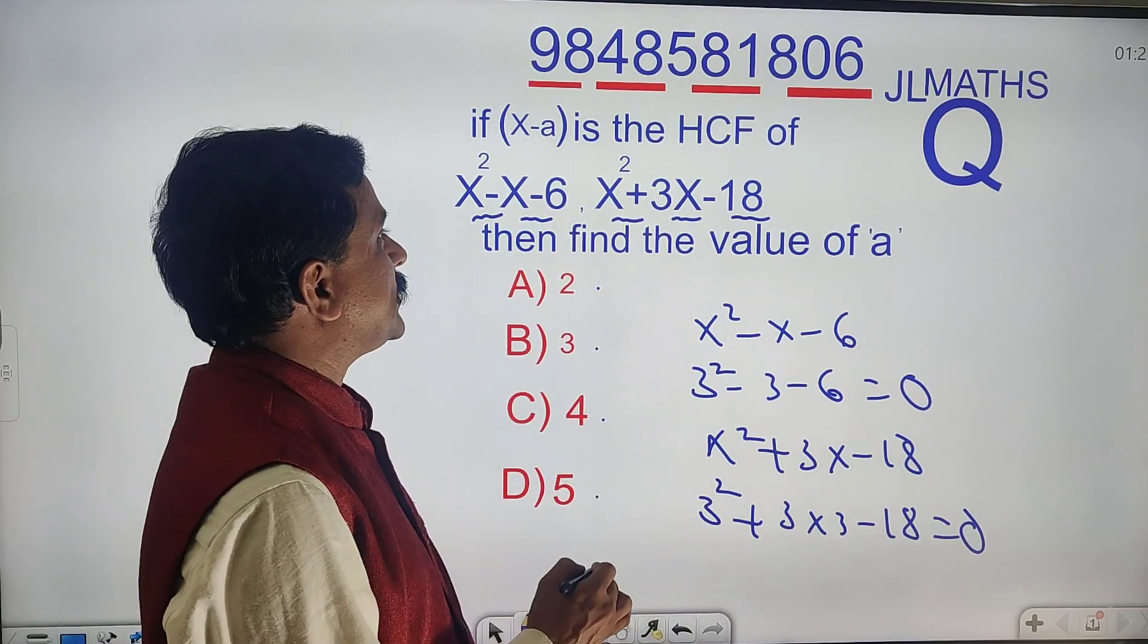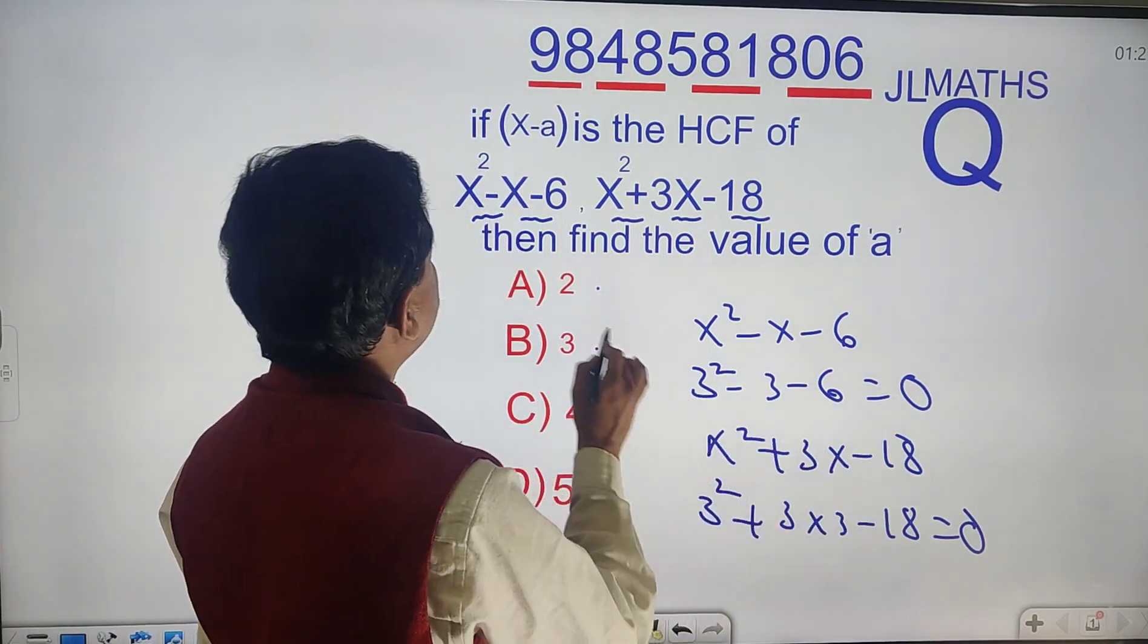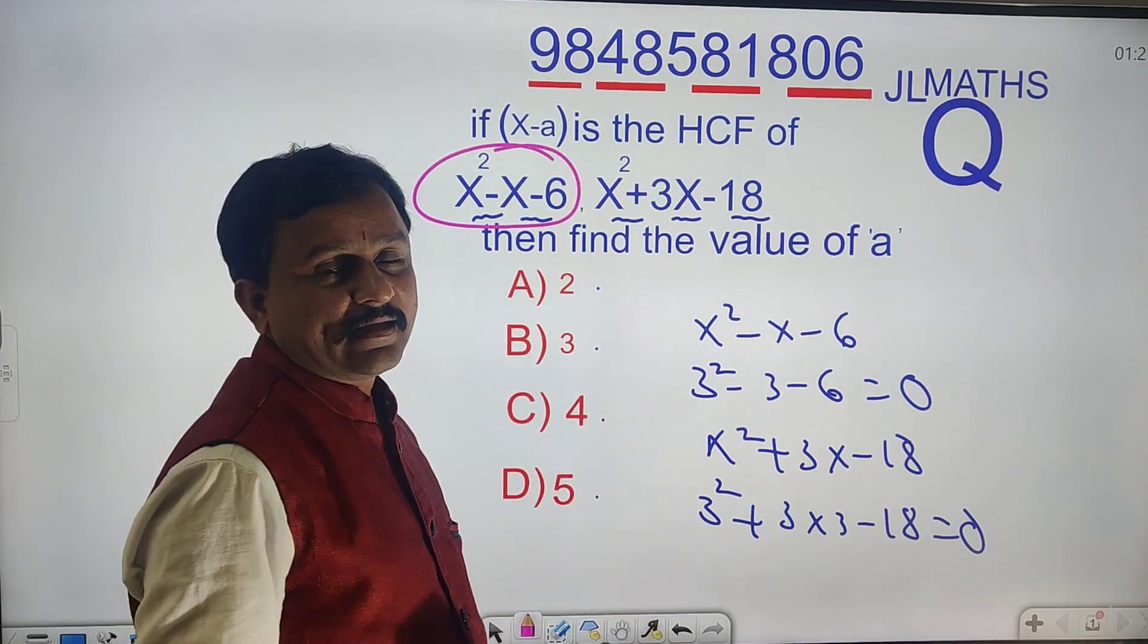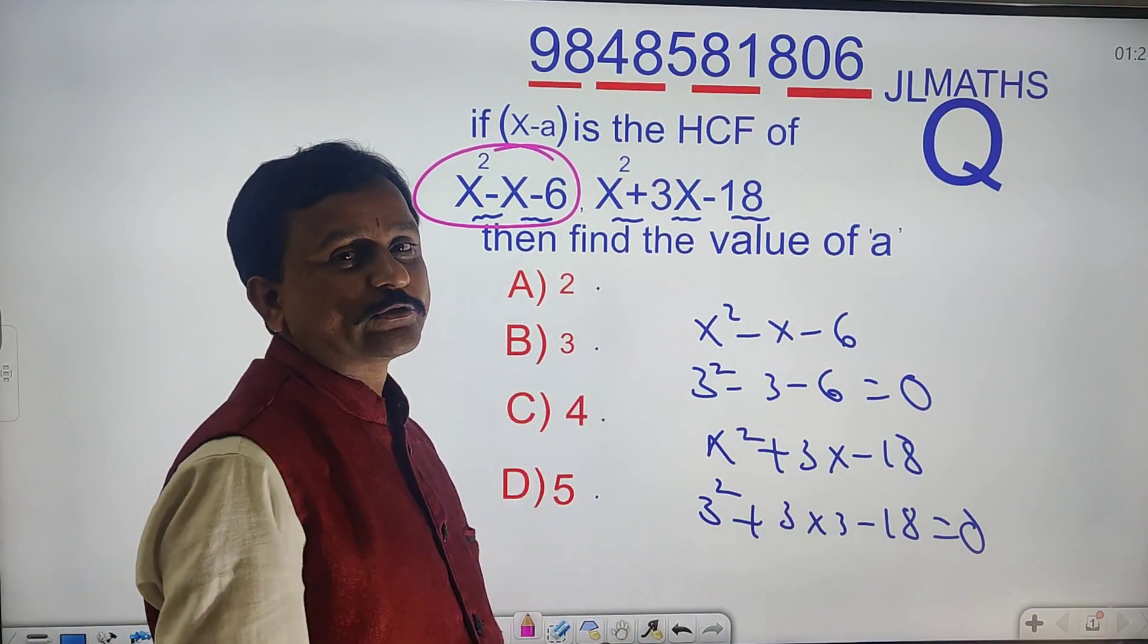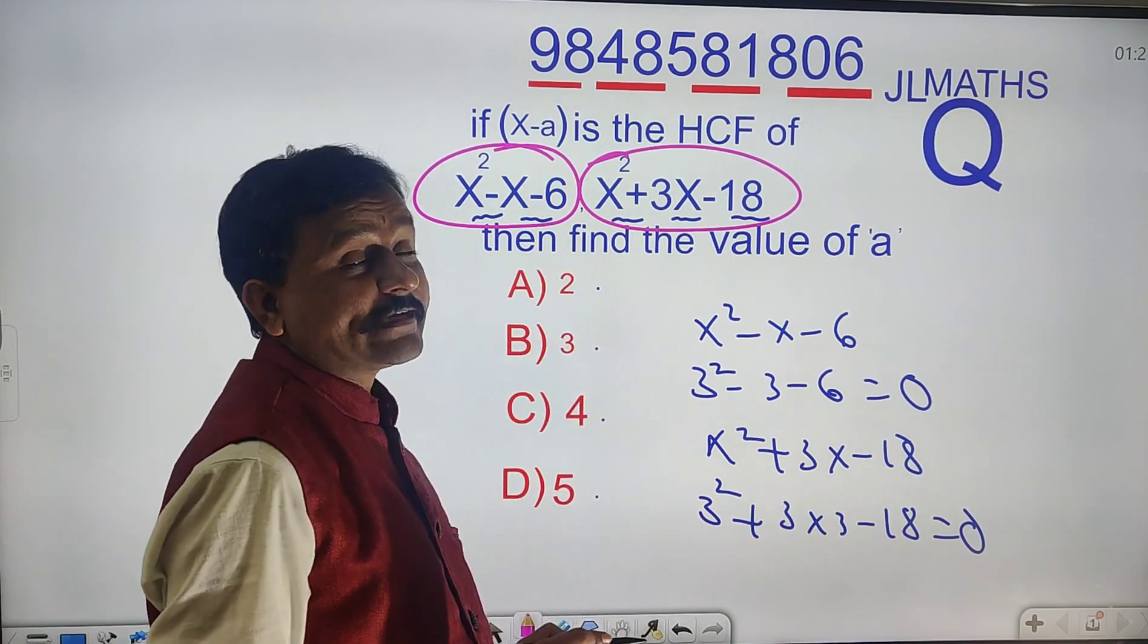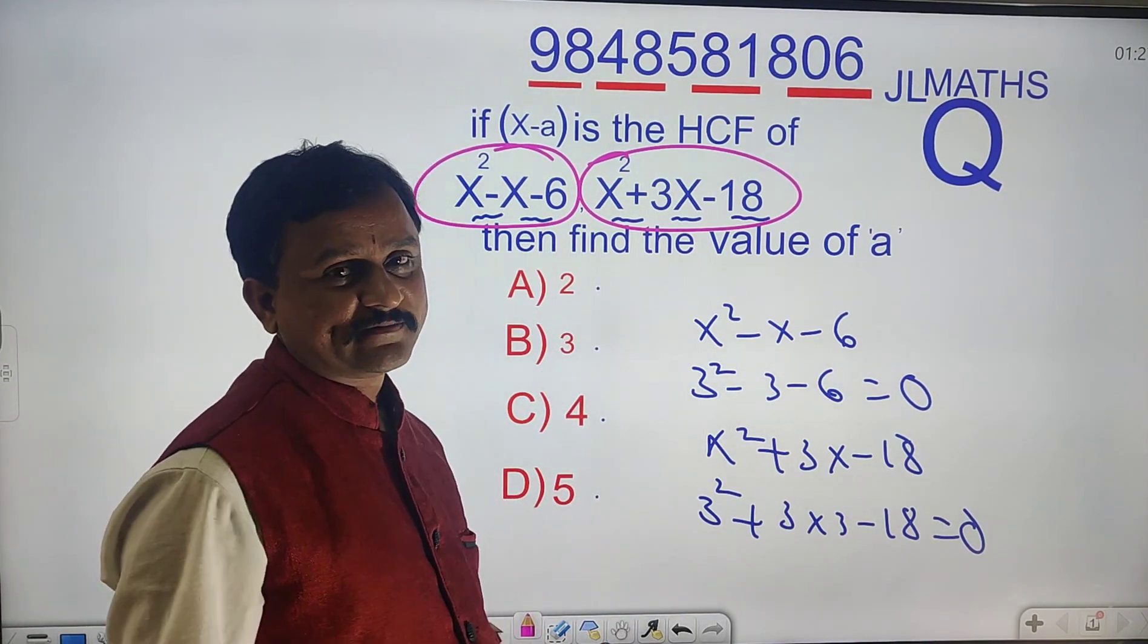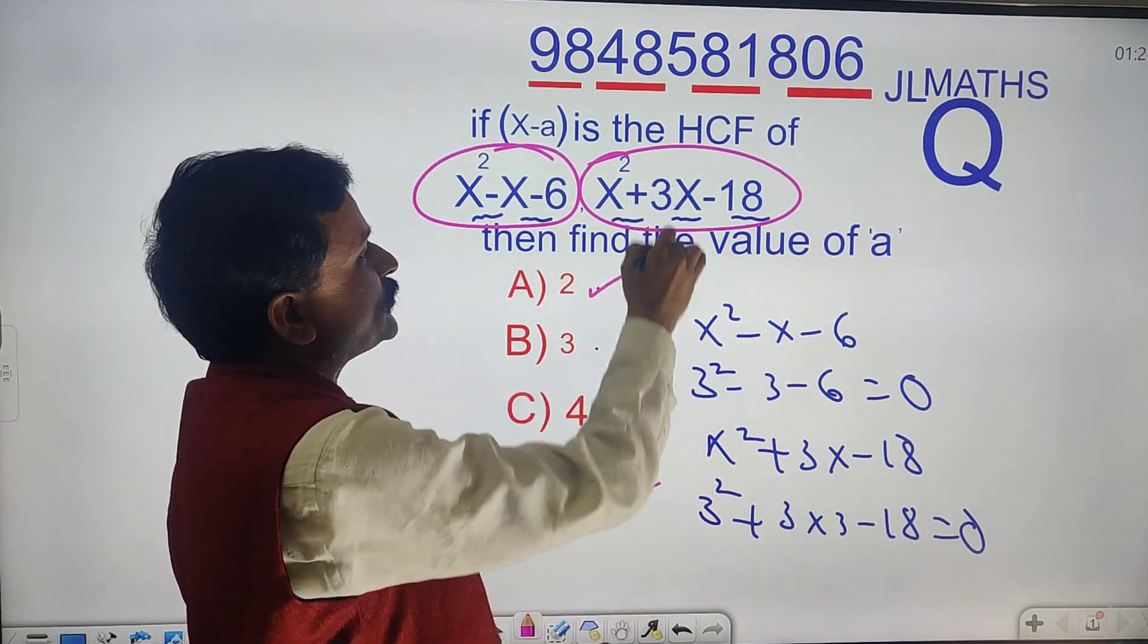Therefore, in this backward pattern, in these two equations x square minus x minus 6 and x square plus 3x minus 18, when x equals 3, both equal 0. If you want to check the value, x equals 3 makes both expressions equal to 0.